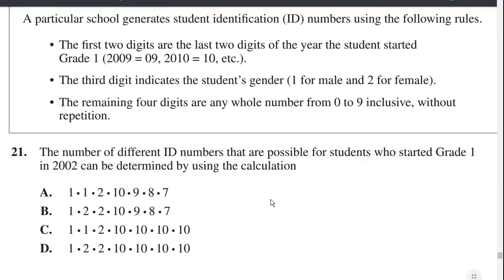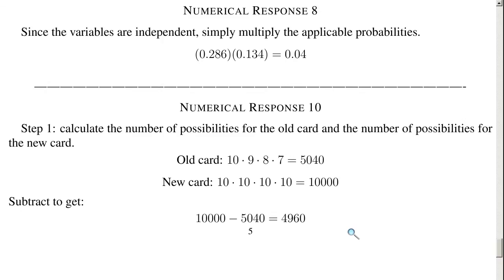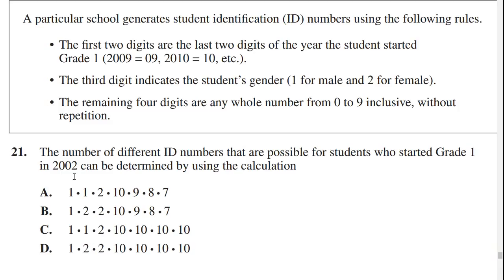The way this question is worded is a little bit strange, because the first two digits are determined for you — the first digit is determined, the second digit is determined, so it's 1 times 1. The third digit has two possibilities: male or female, so it's a 2. So 1 times 1 times 2. Then the next four digits is 10 times 9 times 8 times 7 because there are no repeating digits: 10 possibilities for the first, then 9, then 8, then 7. So it's 1 times 1 times 2 times 10 times 9 times 8 times 7. The answer is A.